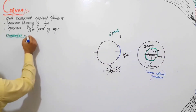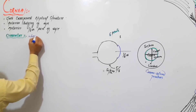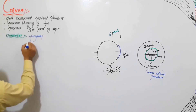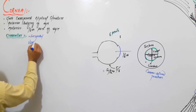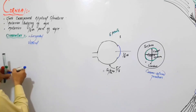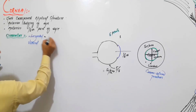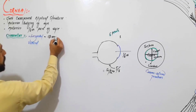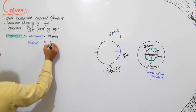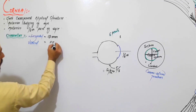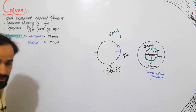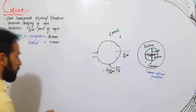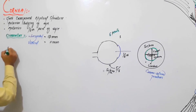The horizontal diameter is 12 mm and the vertical diameter is 11 mm. That covers the diameter of the cornea. Next, let's discuss the thickness of the cornea.